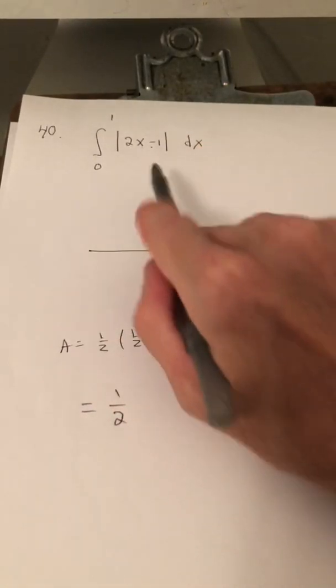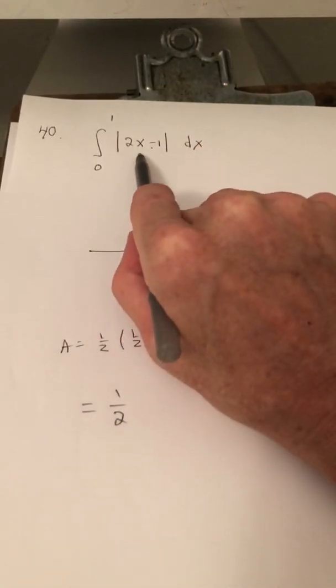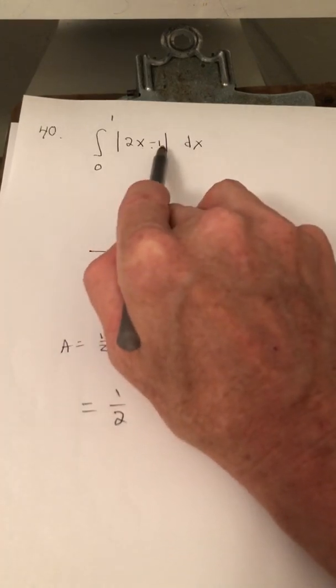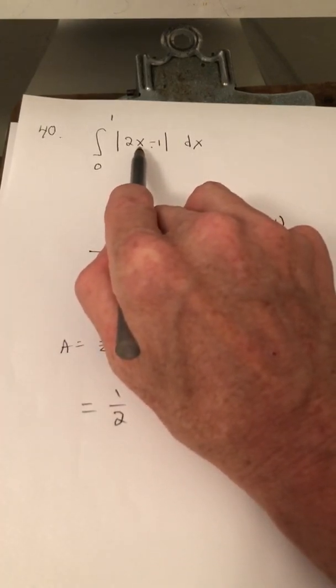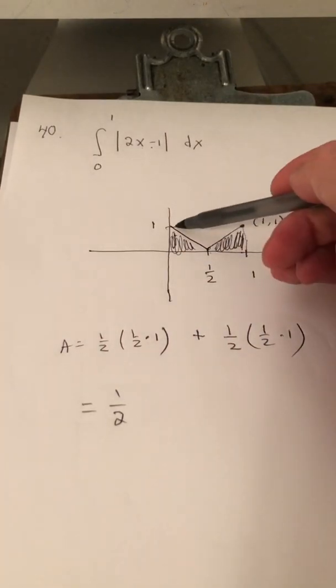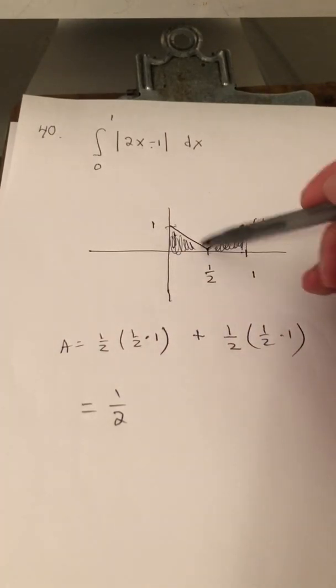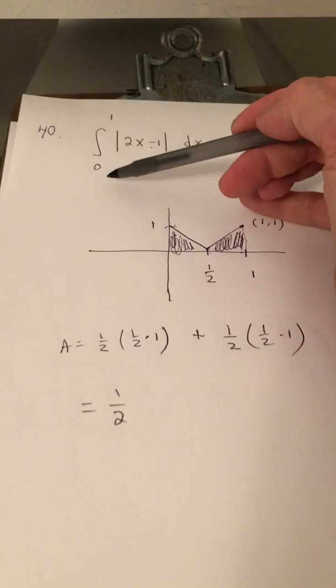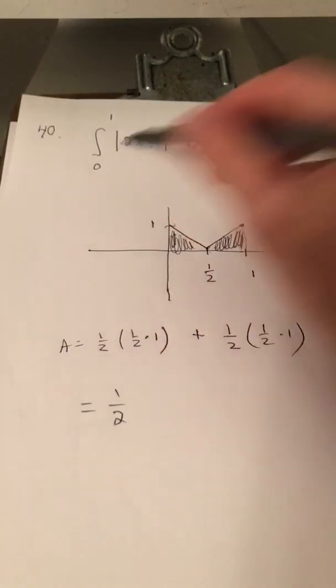The only difference is where the vertex is, whatever x value makes this argument 0. So that x value is actually 1/2. So we still have our V, like we're used to. And look at our limits of integration, 0 and 1. So when x is 0, y is 1.